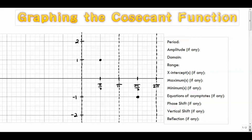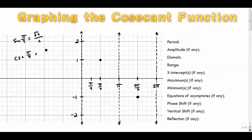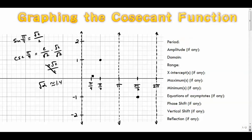We have three asymptotes: x = 0, x = π, and x = 2π. These are barriers where the function doesn't exist. It's worth checking π/4: we said csc(π/4) = √2, which is about 1.4. So when x is π/4, y comes out to about 1.4 — I'll go up to about one point four on the graph.